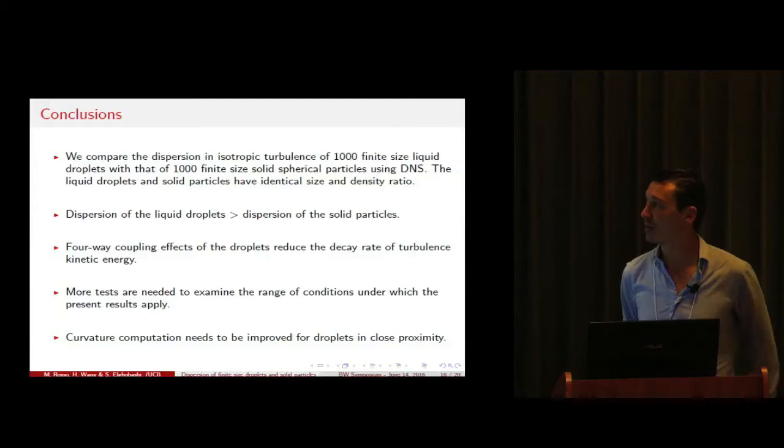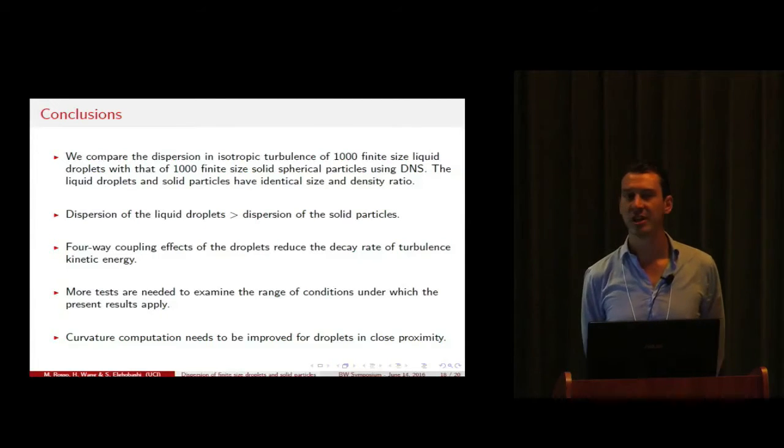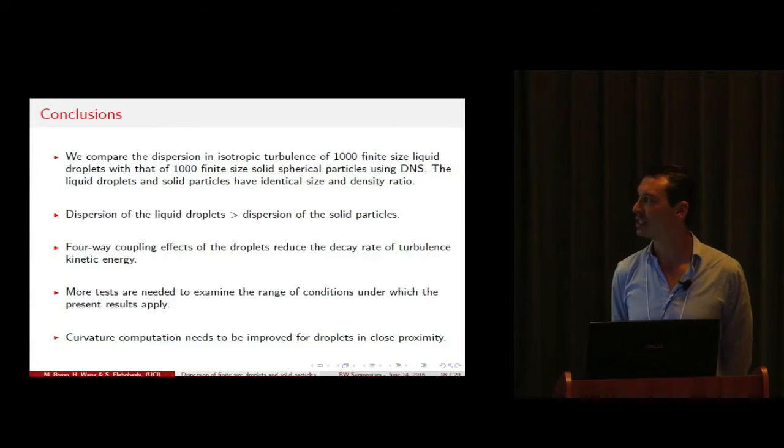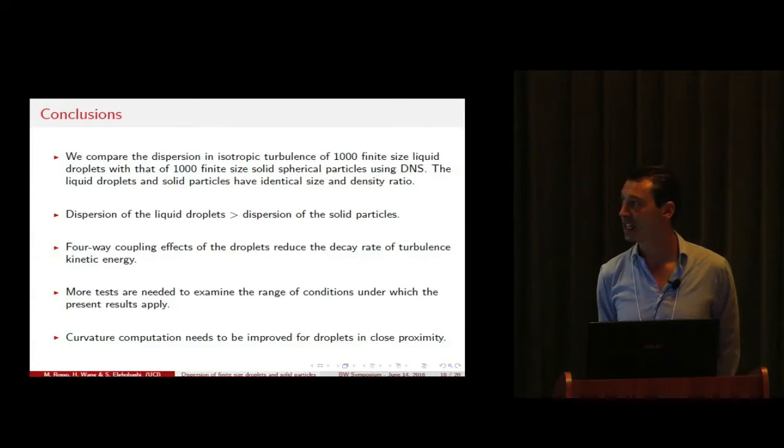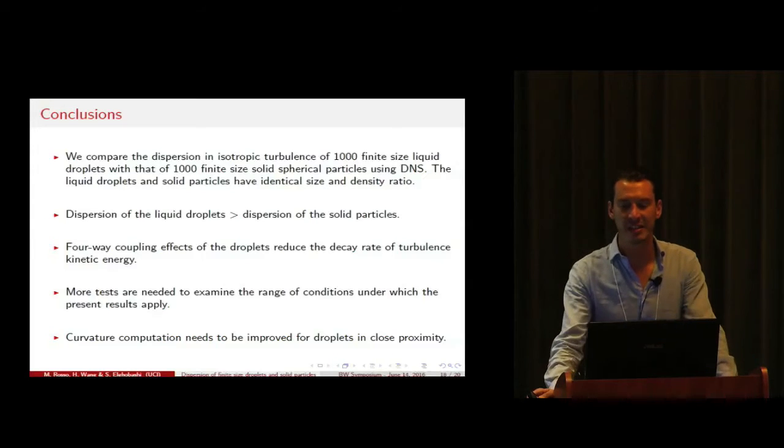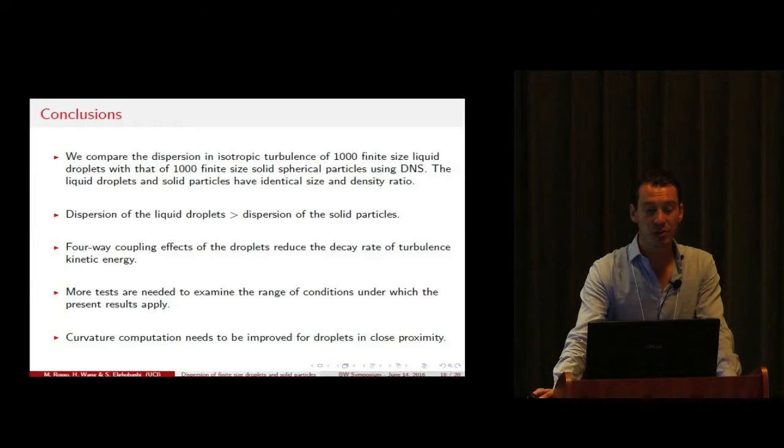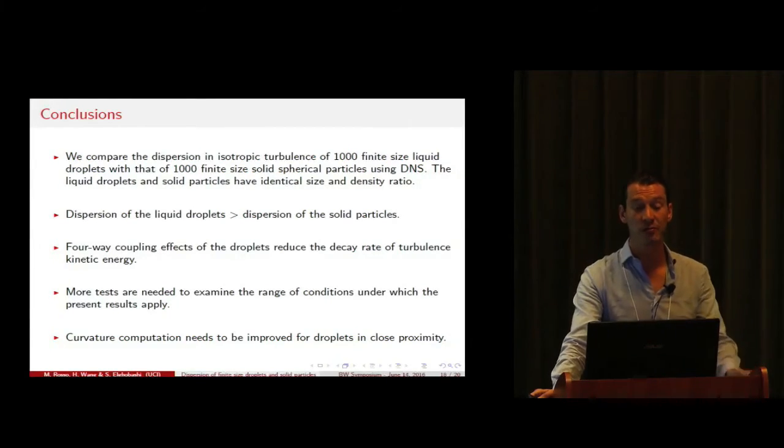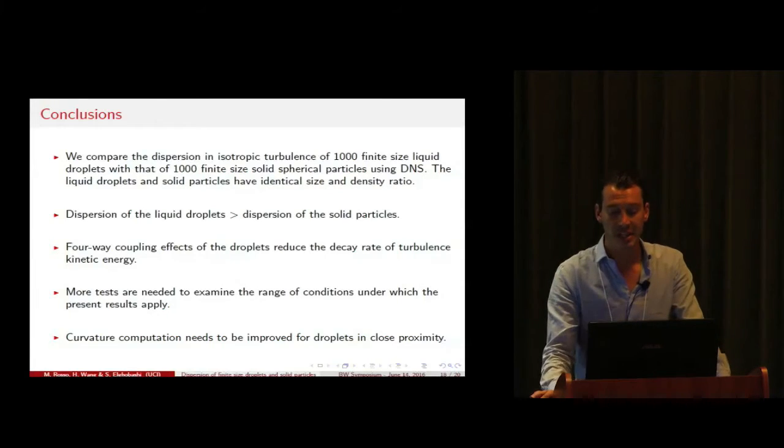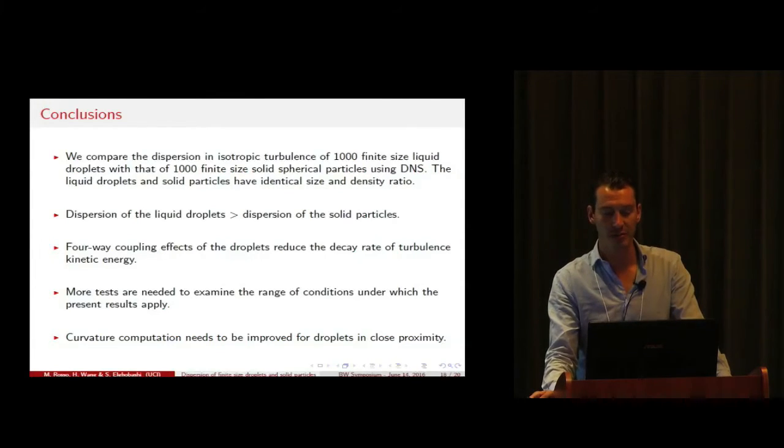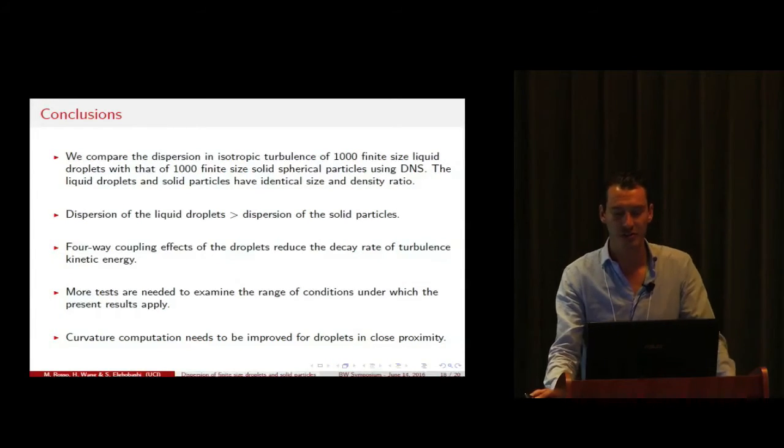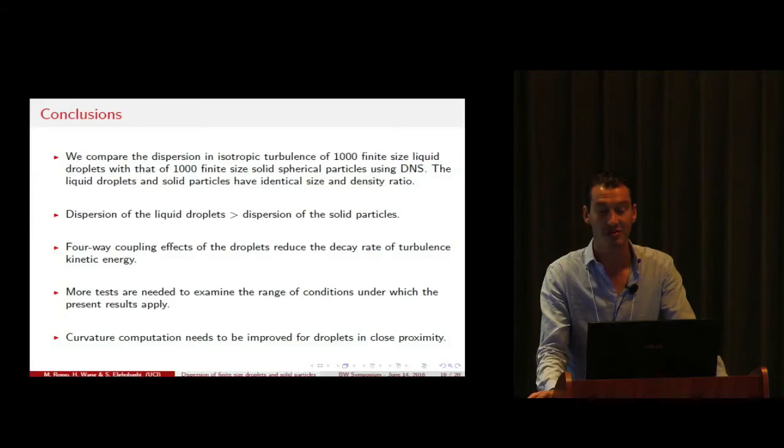In conclusion, we compared the dispersion in isotropic turbulence of 1,000 finite-size liquid droplets with that of 1,000 finite-size solid spherical particles using DNS. Liquid droplets and solid particles have identical size and density ratio. The main finding is that dispersion of the liquid droplets is larger than the dispersion of the solid particles, and we believe this is due to the four-way coupling effects of the droplets that reduce the decay rate of turbulence kinetic energy.